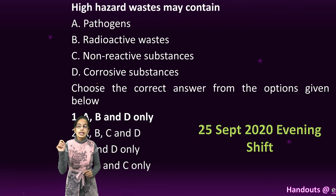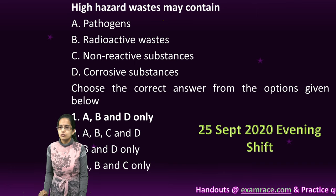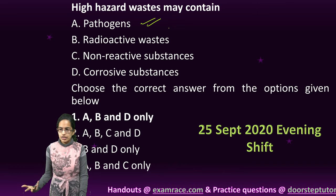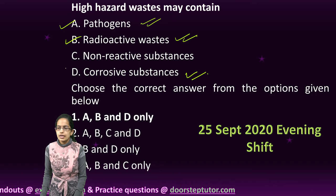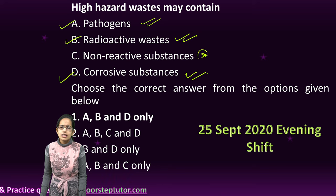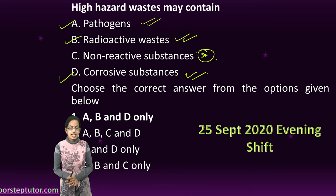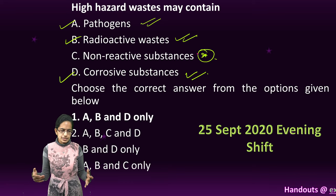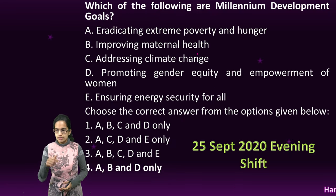The next question is on highly hazardous waste. Highly hazardous waste would have pathogens that could spread and contaminate, radioactive waste and corrosive substances. So A, B and D would be the right option. If it is non-reactive, it is usually not part of highly hazardous waste — because if it is hazardous, it would be reactive, probably radioactive, and it would damage storage, transportation and other systems.